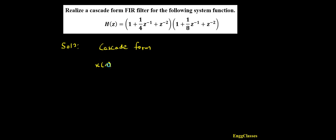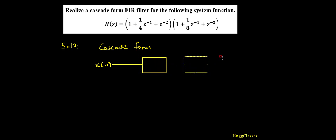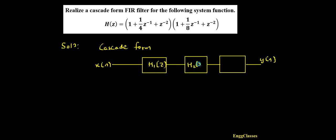First I would have x of n, then I will have a straight line. After this I will have a few blocks — 1, 2, 3 and so on — connected together. Towards the end I would have the output y of n. In between I would have the blocks of H1(z), H2(z), H3(z) and so on. So this is the general form of cascade form realization. That means if H(z) is given, I need to rearrange it in the product of terms.